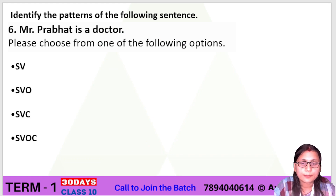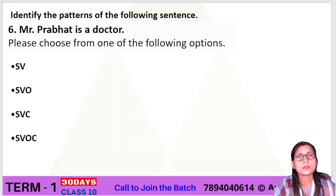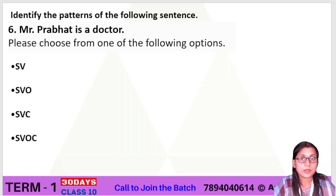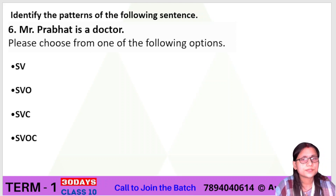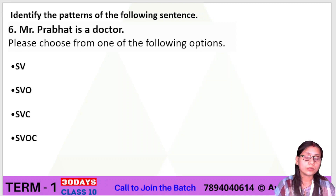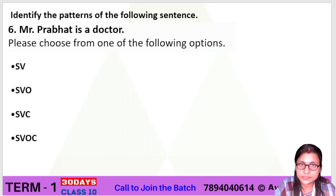Now, identify the patterns of the sentence. Sentences are of three types: simple sentence, compound sentence, and complex sentence. Simple sentences are divided into four types: declarative, interrogative, imperative, and exclamatory. The next questions focus on the patterns of declarative sentences.